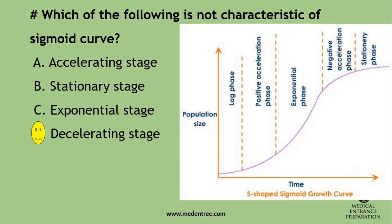In the sigmoid curve, there is first a lag phase and positive acceleration phase where rapid growth occurs, then an exponential phase. In the positive acceleration phase there is gradual growth, and in the exponential phase there is a spike in a very short time. This is followed by a negative acceleration phase, where the rate slightly decreases, and then a stationary phase. So there is no decelerating phase.